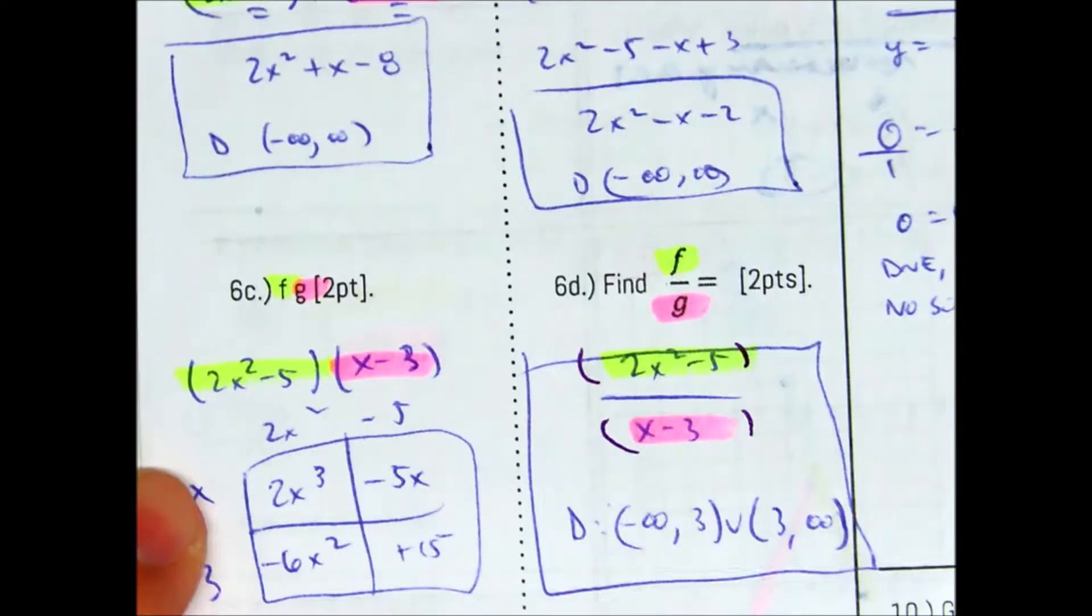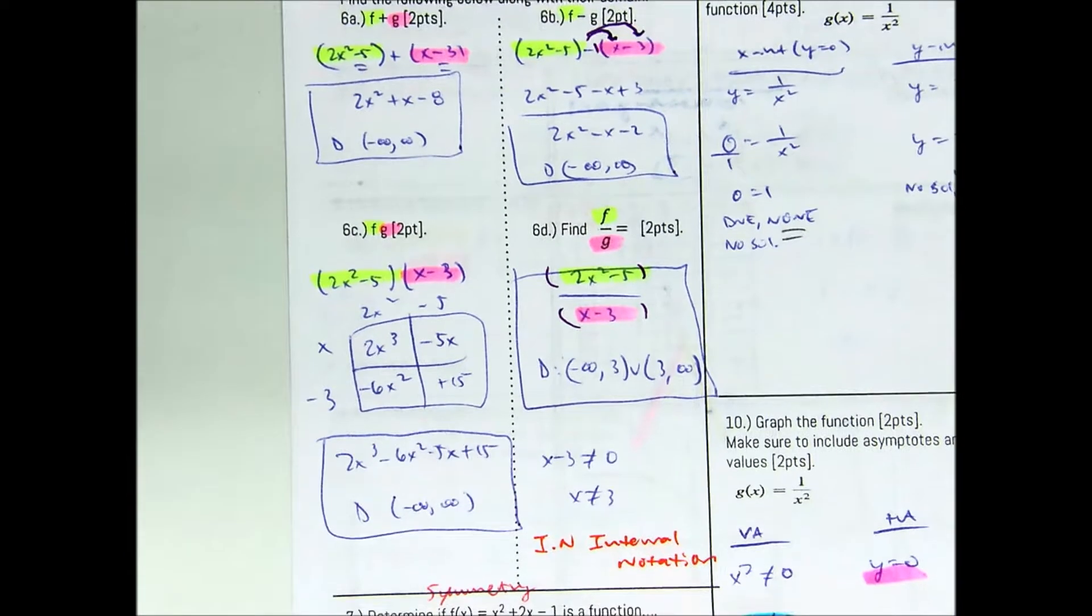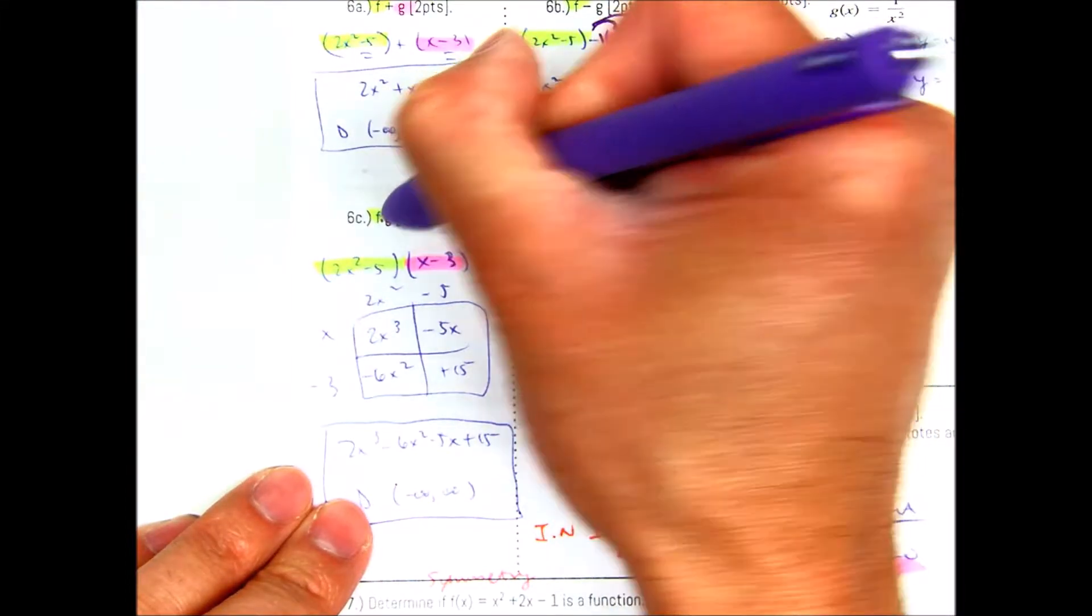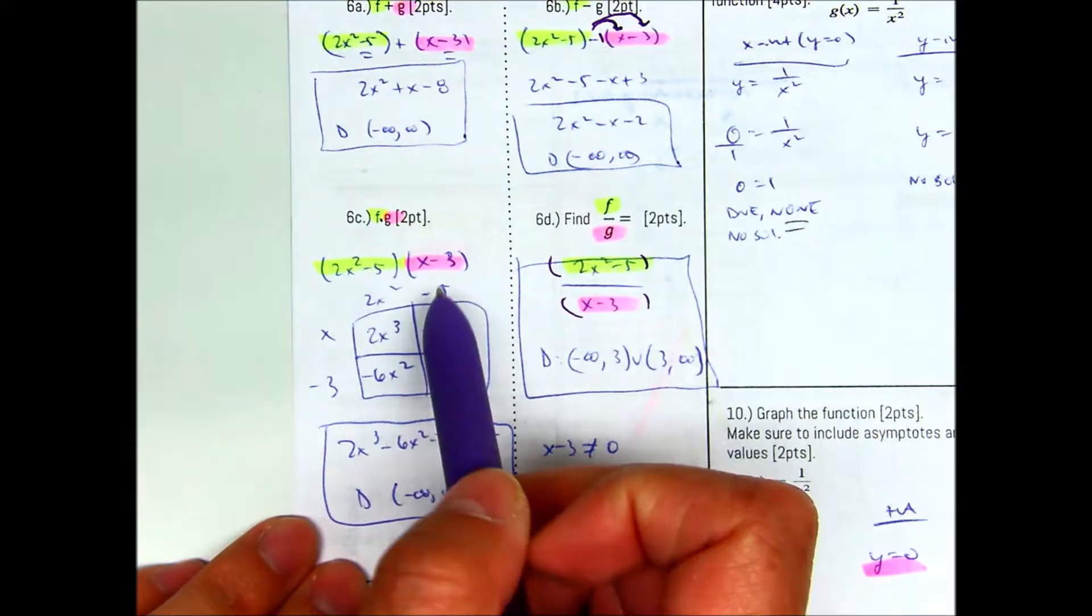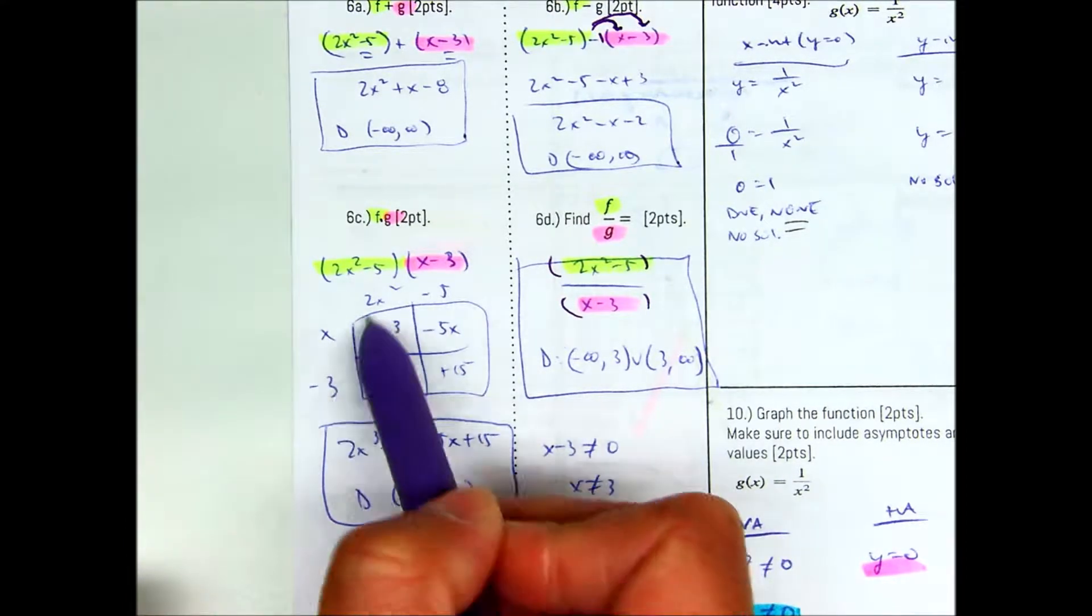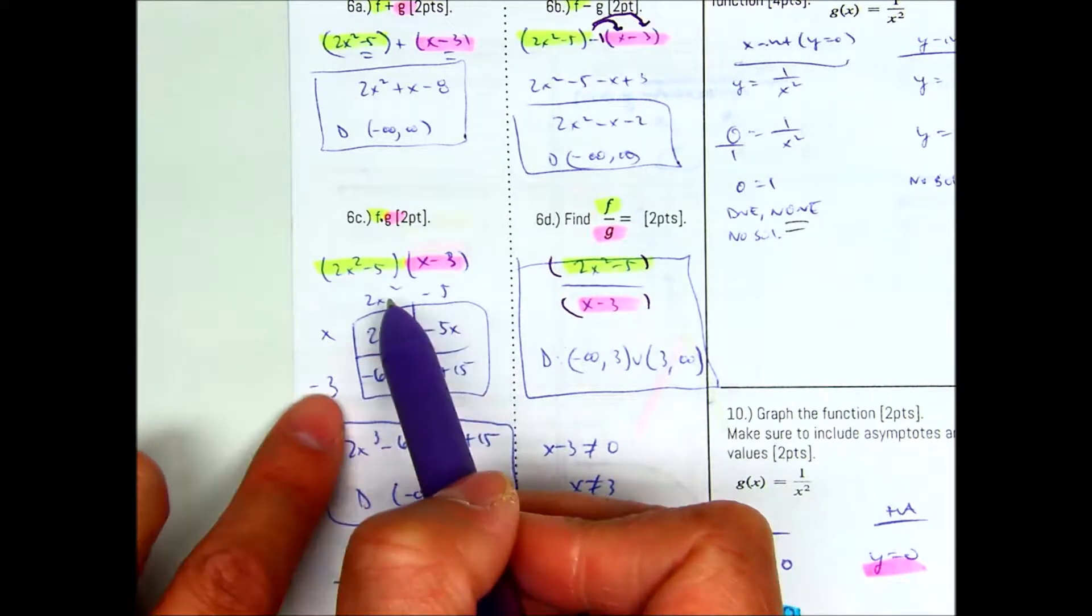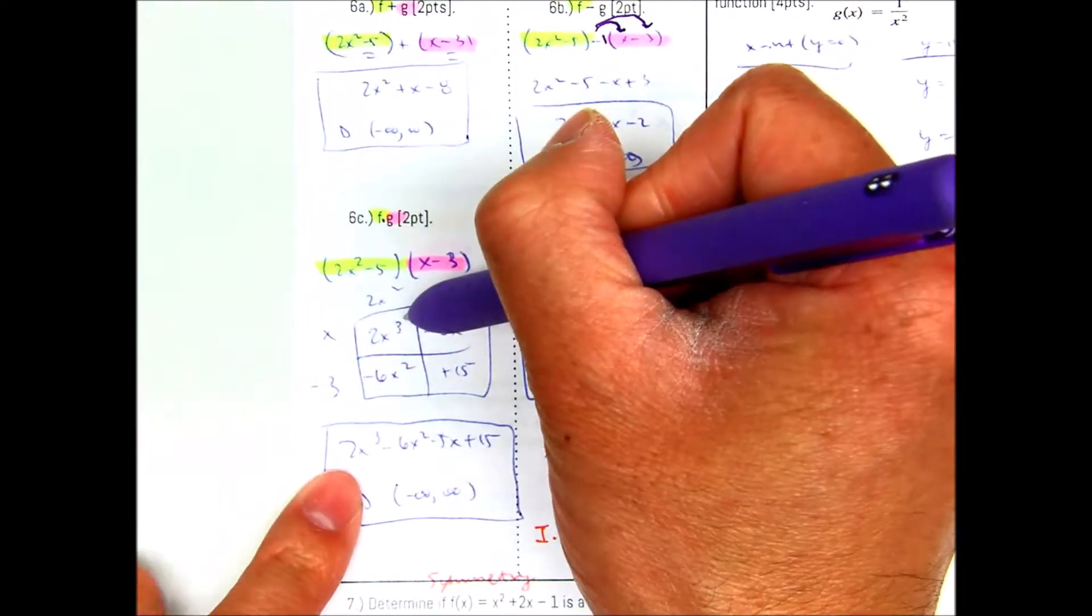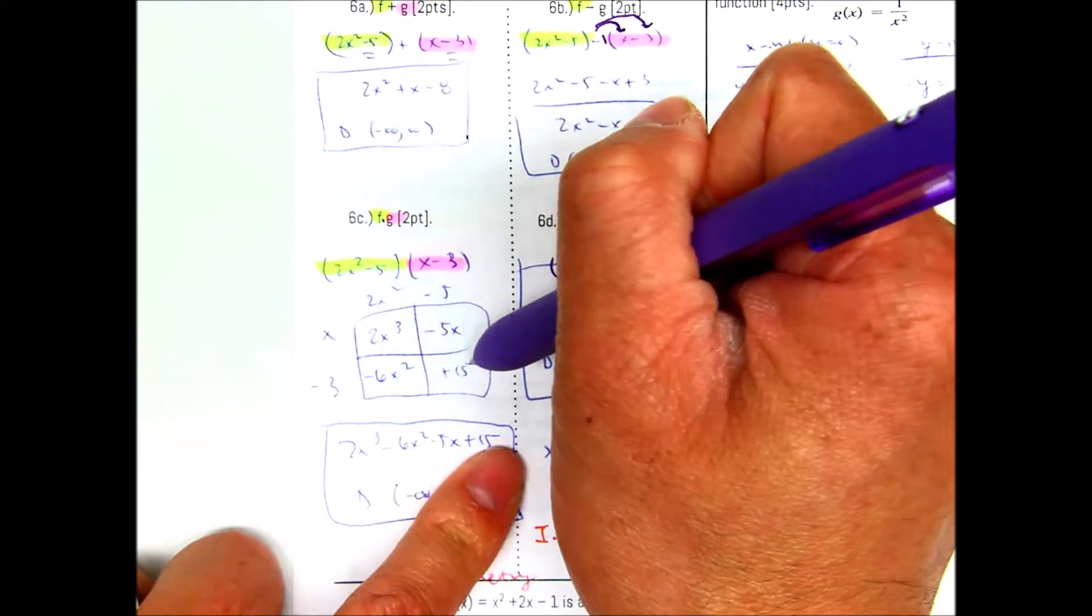Question number C. Here you have the two letters F and G, so it's multiplication. So I'm going to put those in parentheses. When you have those, you're going to use your box method, or you can use FOIL. So 2x squared minus 5, and then x minus 3. Remember, the order doesn't matter how you write those. And then you can just multiply those. 2x cubed, negative 5x, negative 6x squared, and positive 15. Now we're going to add our combined like terms. So 2x cubed, negative 6x squared, minus 5x, plus 15. And your domain is negative infinity to positive 15.